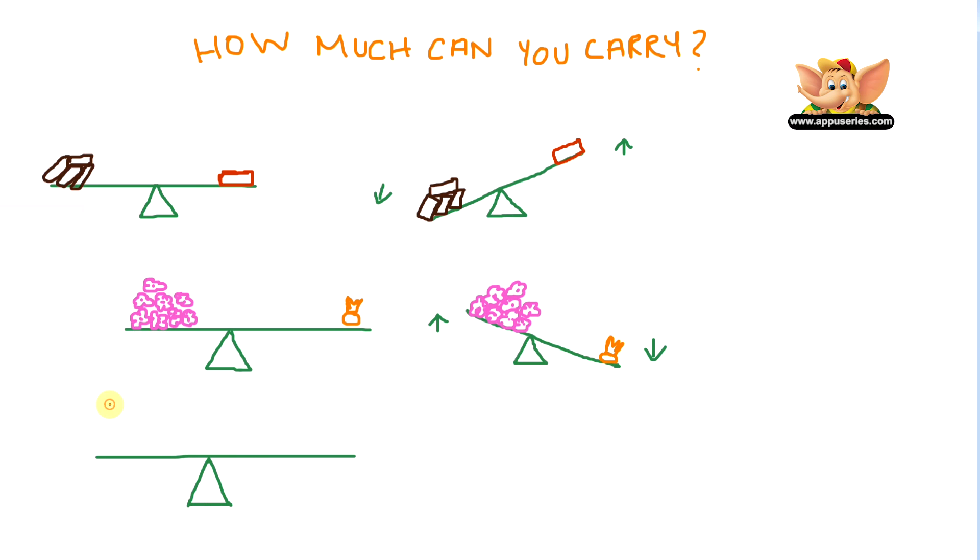Let me give you one last example. What if I have a thousand coins on each side of the seesaw? What happens? Both sides have the same weight or the same quantity of objects. Therefore, the seesaw will be balanced and straight, like this.